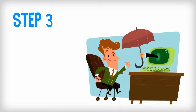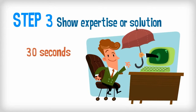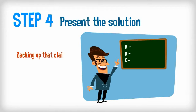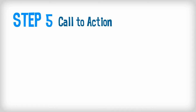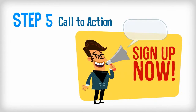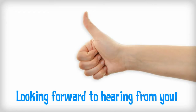Step number three is showing that you have the necessary expertise or solution to solve the problem. That should hold their attention, giving you another 30 seconds or so for the fourth step — actually backing up that claim. Present your solution and clearly show its benefits in as succinct and strong a manner as possible. Once you've delivered the relevant details, move on to step five, the call to action. Give your audience a specific action they can take, such as contacting you, signing up for a demo, or visiting a website link. Then end the video on a positive note.